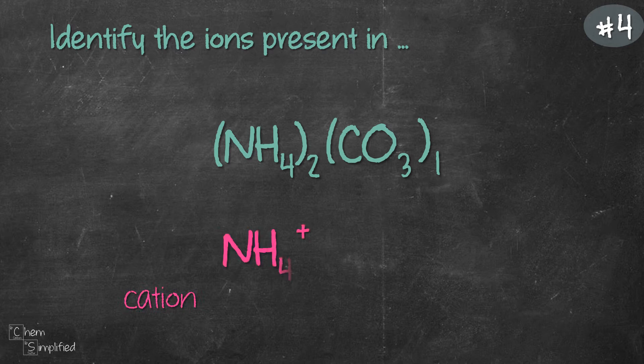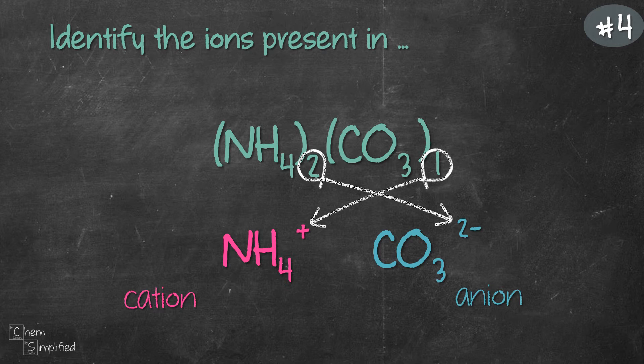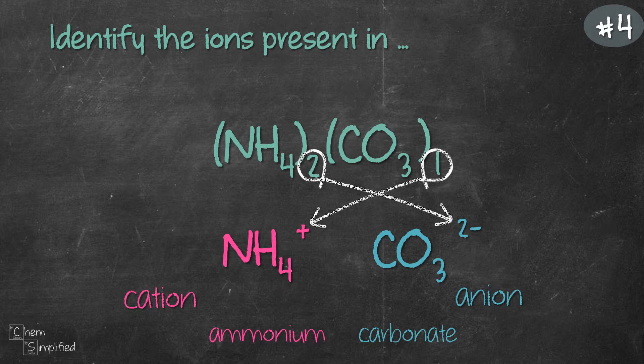So we use the crossover method. We take the 2 and cross it over and that will give us CO3 2- and we take the 1 and cross it over and that will give us NH4+. So our cation is going to be ammonium ion, which is NH4+, and our anion is going to be the carbonate ion, which is CO3 2-.